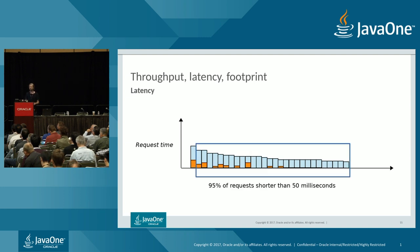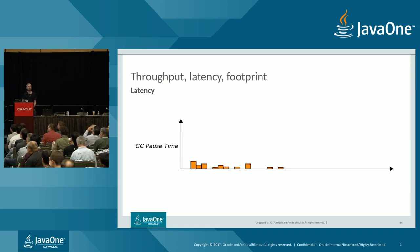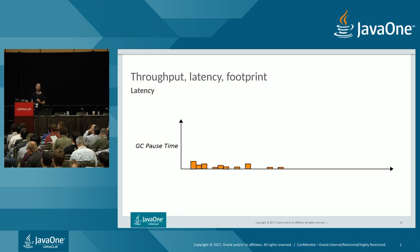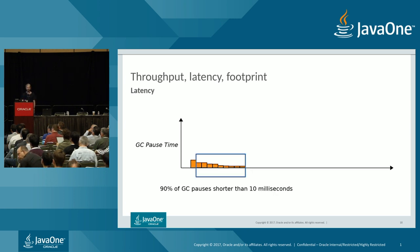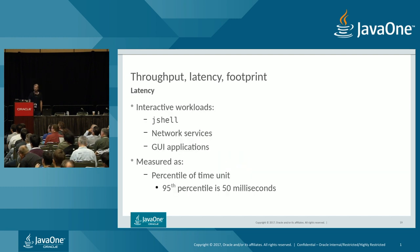To quantify latency, we sort request times from longest to shortest. We can then say, for example, that 95% of my requests finished in 50 milliseconds or shorter. We can do the same for GC pauses — note that the longest request doesn't always correspond to the longest GC pause, since network latency and disk I/O also contribute. We can sort GC pause times and say, for example, 90% of GC pauses were shorter than 10 milliseconds.